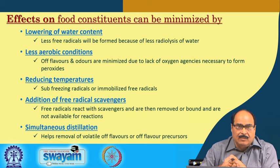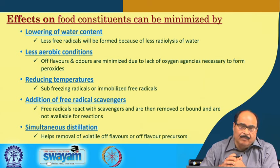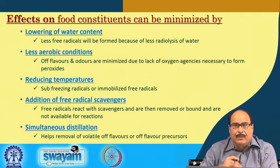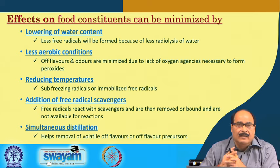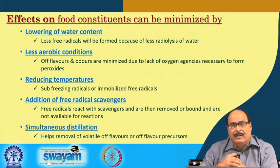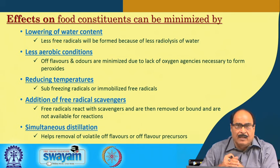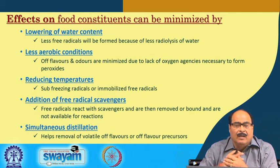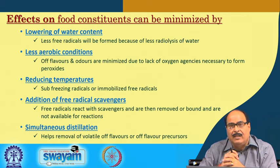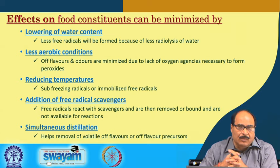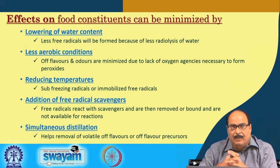Less aerobic conditions are also important: if oxygen is present, oxidation reactions, peroxide formation, and other reactions may lead to off flavors and off colors. So irradiation done under low-aerobic conditions, and irradiated food stored in an anaerobic environment, will help prevent off-flavor and off-color associated reactions. Reducing temperature — irradiation in the frozen state — is considered a better approach because sub-freezing immobilizes free radicals that play a major role.